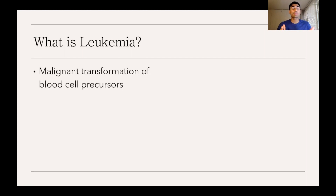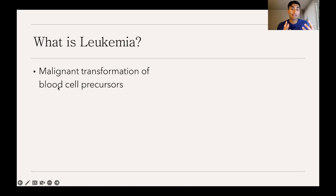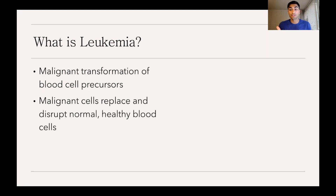So what is leukemia? Leukemia is a malignant transformation of blood cell precursors. It is a blood cancer where there is essentially an unregulated multiplication of immature blood cells. These malignant cells replace and disrupt the normal healthy blood cells, causing a lot of the symptoms that we see in leukemia.